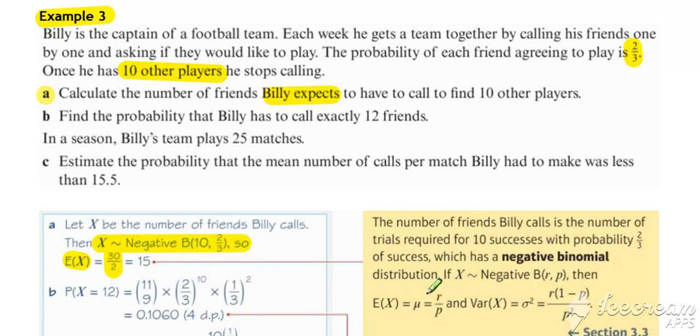The expected value for a negative binomial is r over p, so 10 divided by two-thirds, which equals 15.